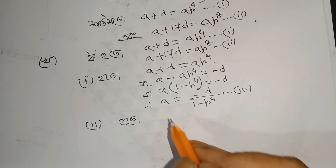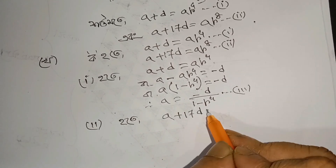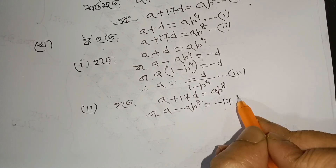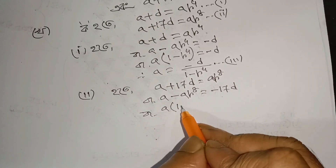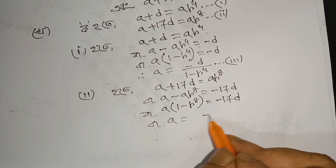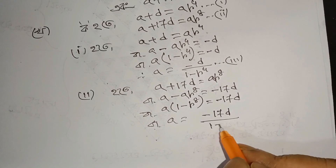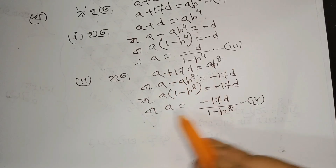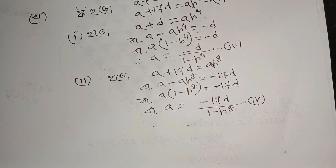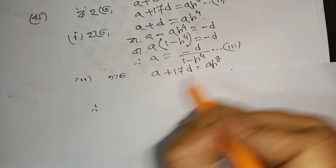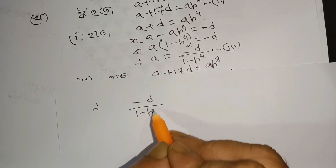So a plus 17d equals a minus r to the power 8, and therefore a equals minus 17d divided by 1 minus r to the power 8. Let us compare these equations together.